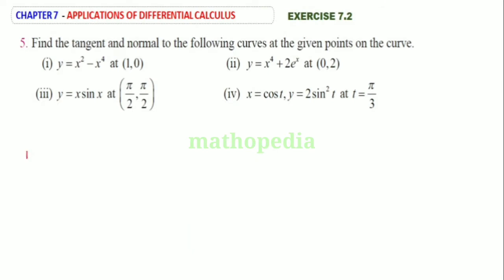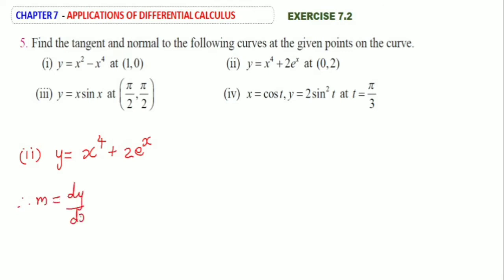Second subdivision: y is equal to x power 4 plus 2 e power x. Therefore, slope m is equal to dy by dx. x power 4 differentiated gives 4x cube, plus 2 into e power x differentiated gives same e power x.